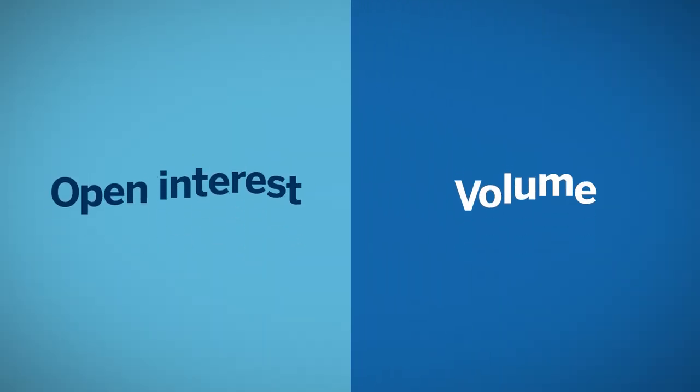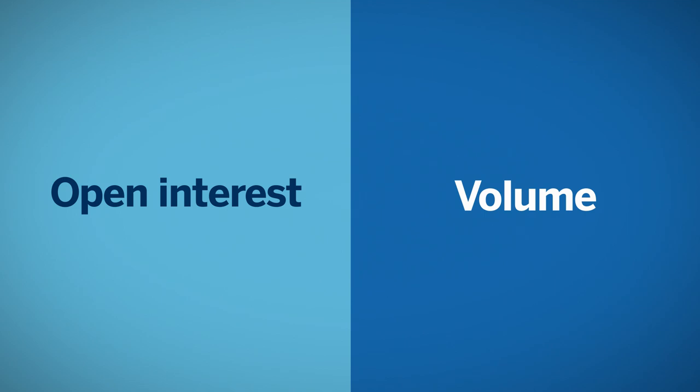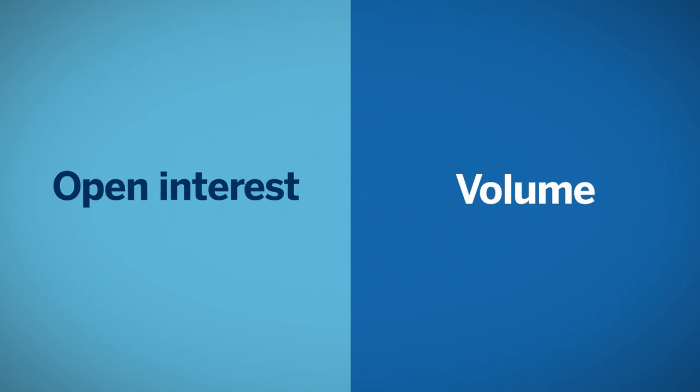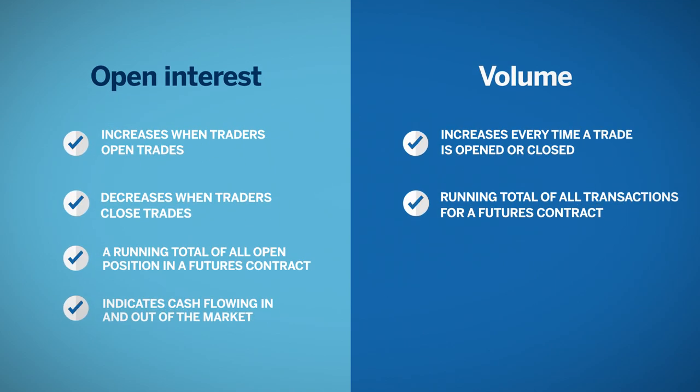Open interest and volume are related concepts. One key difference is that volume counts all the contracts that have been traded, and open interest is a total of contracts that remain open in the market. Traders can think of open interest as the cash flowing to the market. As open interest increases, more money is moving into the futures contract, and as open interest declines, money is moving out of the futures contract.